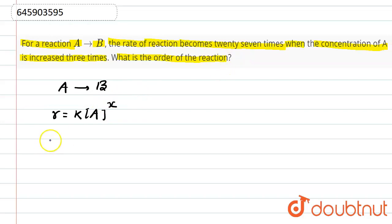Rate becomes 27 times, means 27 times the initial rate, when the concentration of A is increased three times. This means we have to take here 3A to the power x. Now let's assume this is the first equation and this is the second.